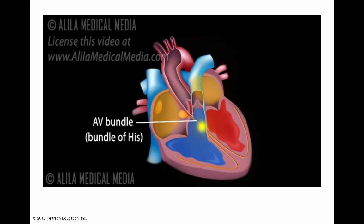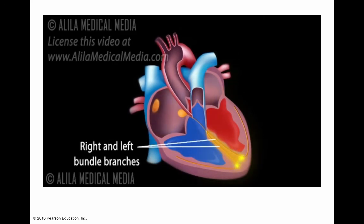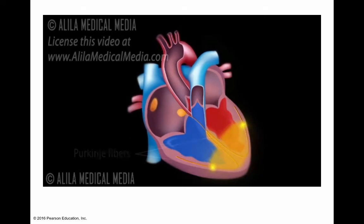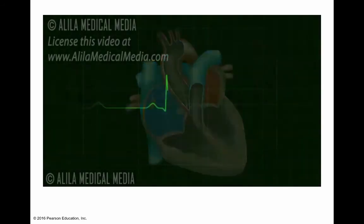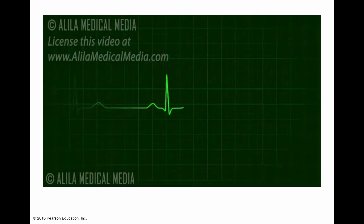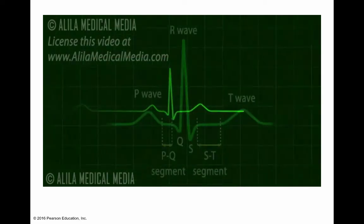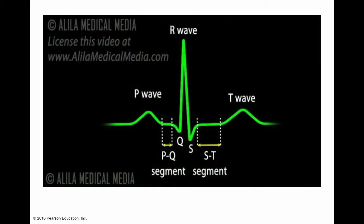The AV node receives signals from the SA node and passes them onto the atrioventricular bundle, or bundle of His. This bundle is divided into right and left bundle branches, which conduct the impulses toward the apex of the heart. The signals are then passed onto the Purkinje fibers, turning upward and spreading throughout the ventricular myocardium. Electrical activities of the heart can be recorded as an electrocardiogram — ECG or EKG — which is a composite recording of all the action potentials produced by the nodes and cells of the myocardium.